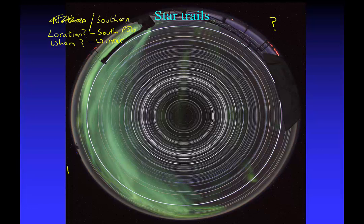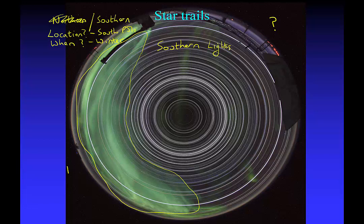And then that greeny-glow you see here — what on earth must that be? Well, that must be the southern lights. We have northern lights, the Aurora Borealis, but there are corresponding southern lights over the South Pole called the Aurora Australis, and you can clearly see that in this photograph. That's a pretty cool photograph of the nighttime sky, although it would probably be very, very cold to go there and have a look at it.